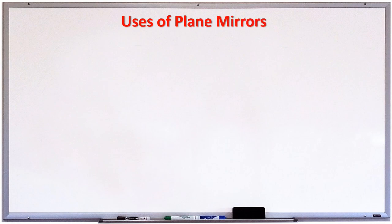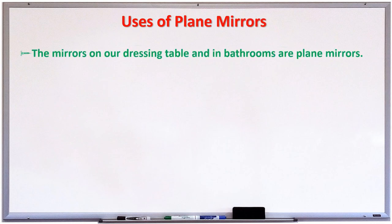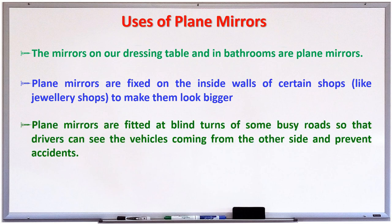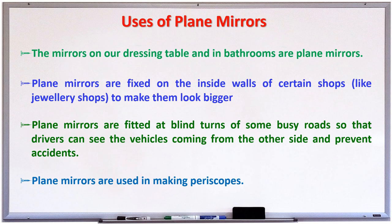Uses of plane mirrors: These mirrors are used in our dressing table or in bathrooms. Plane mirrors are fixed on the inside walls of certain shops like jewelry shops to make them look bigger. Plane mirrors are fitted at blind turns of some busy roads so that drivers can see vehicles coming from the other side to prevent accidents. Plane mirrors are used in making periscopes.